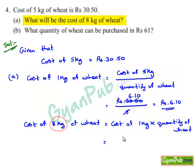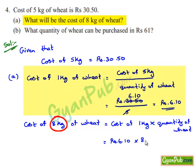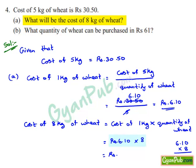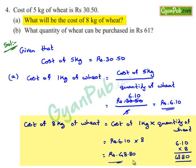Now we have to find cost of 8 kg of wheat. This is equal to Rs. 6.10 multiplied by 8, which gives Rs. 48.80. Therefore, cost of 8 kg of wheat is Rs. 48.80.